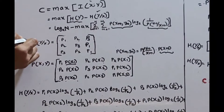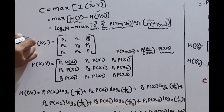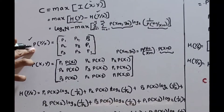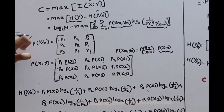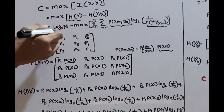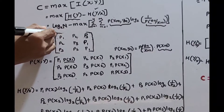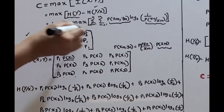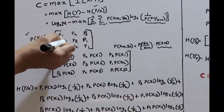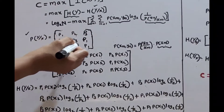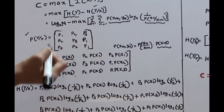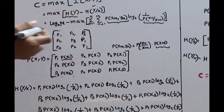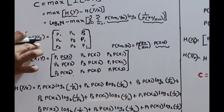Now we are creating a conditional probability matrix P(y|x). This conditional probability matrix has probabilities P1, P2, P3 in the first row; P2, P3, P1 in the second row; and P3, P2, P1 in the third row. This is the matrix for conditional probability.